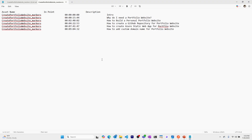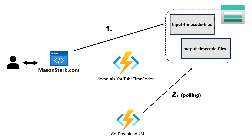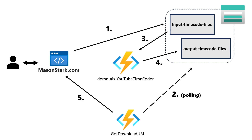Now let's look at the architecture. We already have our portfolio website at masonstart.com. We're going to add functionality to upload a file to a container in an Azure Storage Account. An Azure Function will then poll the output container looking for the edited file. Almost simultaneously, when the blob is uploaded, our timecoder function will be triggered by that blob storage upload and output the manipulated file to the timecode output container. The get-download-URL function will then send a download link to the user.